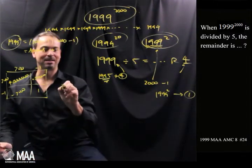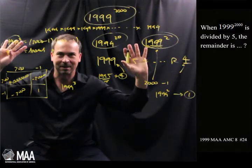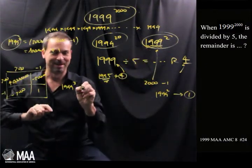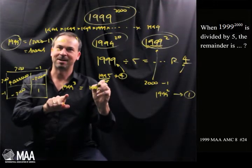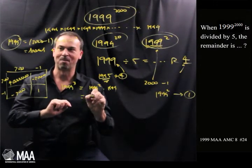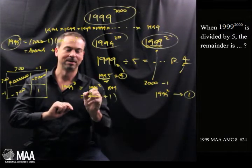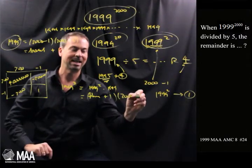Okay, what about 1999 cubed? I feel like my board here, can you still see me? Here goes. Well, it's what I've just done, 1999 squared times 1999. That is a whole bunch of thousands plus 1 times 2,000 take away 1.